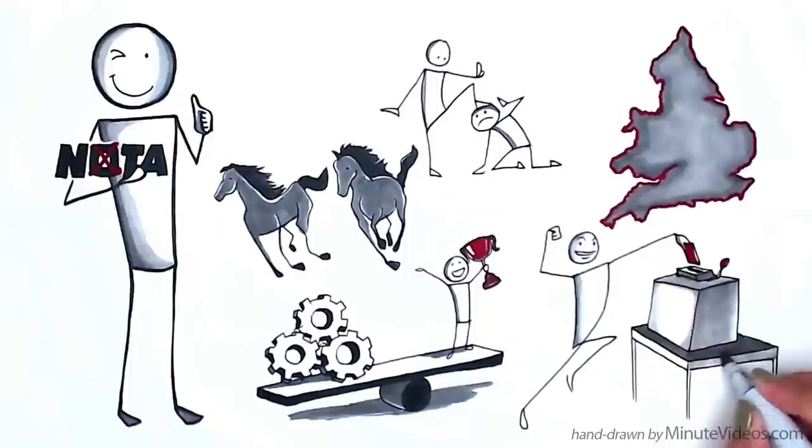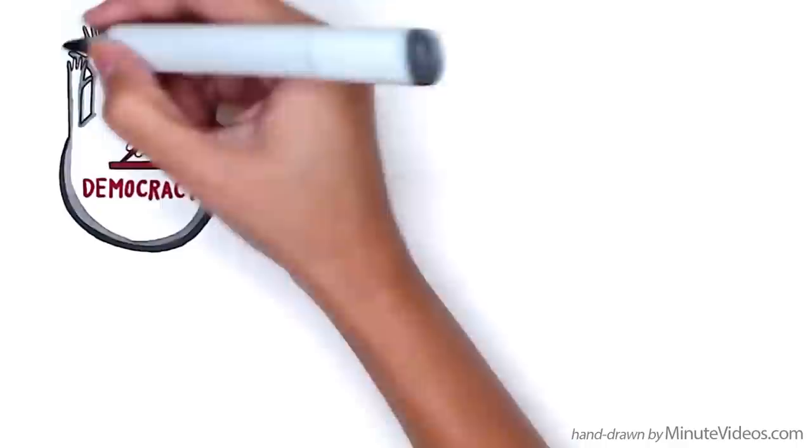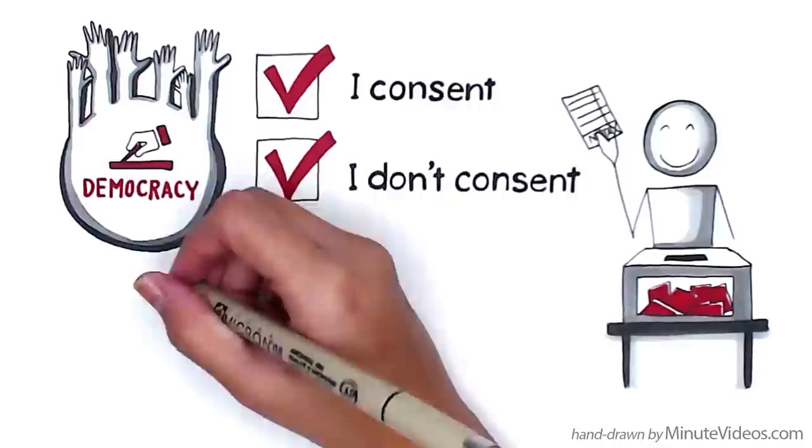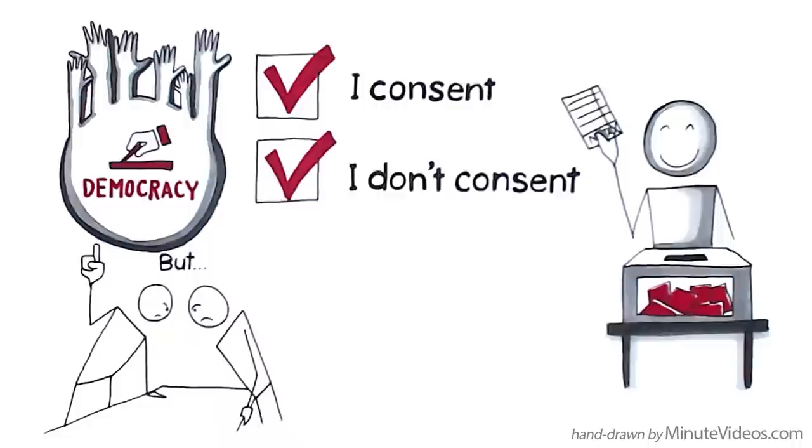To summarize, consent is central to the concept of democracy. Being able to withhold consent is essential if consent is to be meaningful. Nota is the only way to formally withhold consent with regard to elections. When seen this way, it is impossible to argue against nota without arguing against the concept of democracy itself.